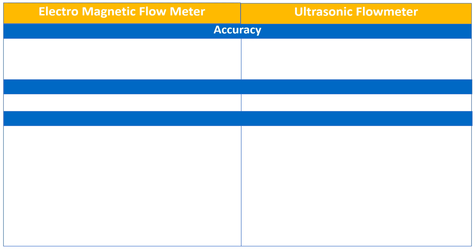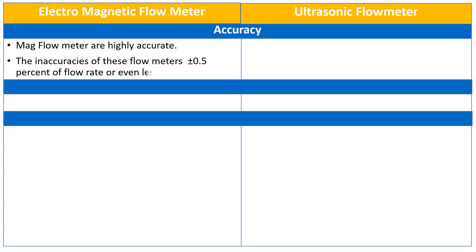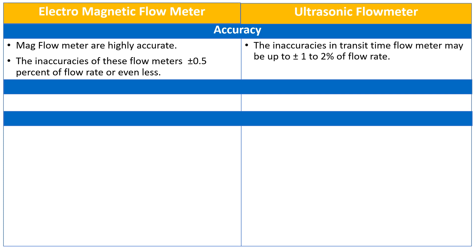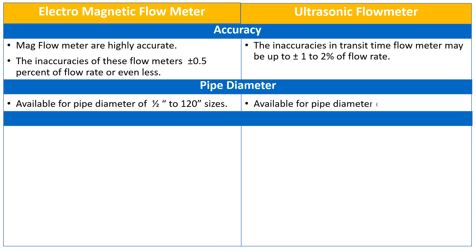The magnetic flow meters are very accurate; the inaccuracies of these flow meters are plus or minus 5% of flow rate or even less. The inaccuracies in transit time flow meters may be up to plus or minus 1 to 2% of flow rate. Regarding available sizes, the electromagnetic flow meters are available for pipe diameters of ½ inch to 120 inch, while the ultrasonic flow meters are available in larger pipe sizes.